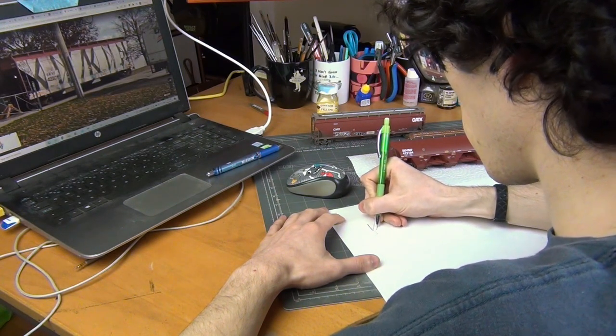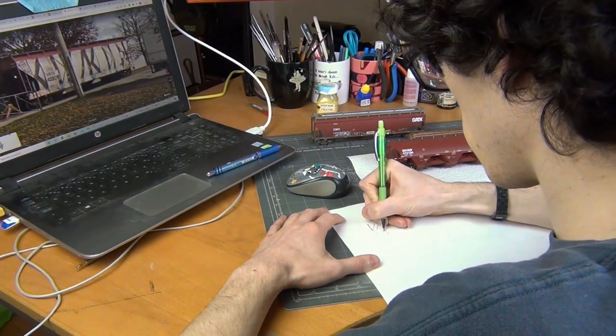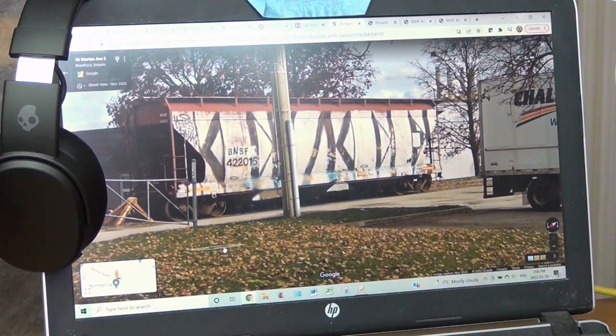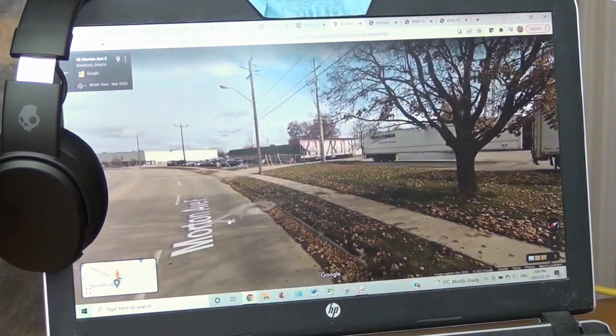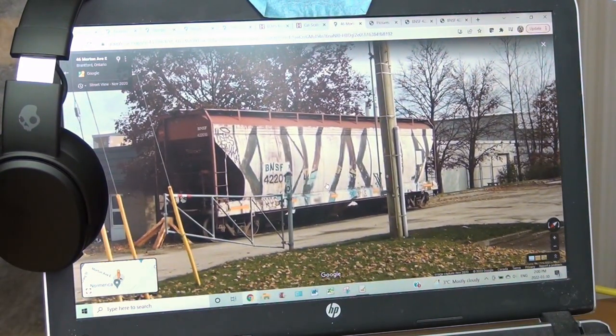Now to begin I sketched out the pattern based off the photo that I want to apply to the car in scale. So as you can see my reference is actually Google Maps. I was just looking at a reference industry and I saw this car and it kind of caught my eye so I figured why not recreate that.